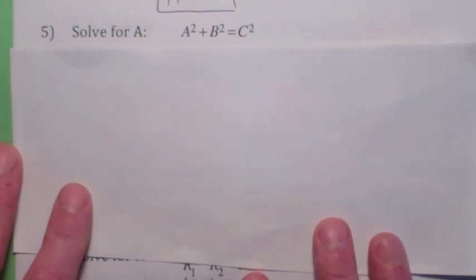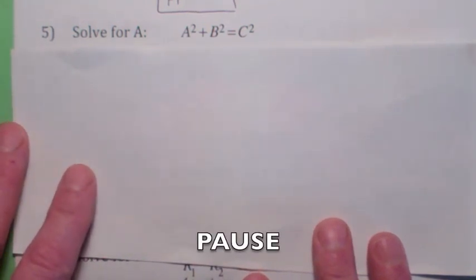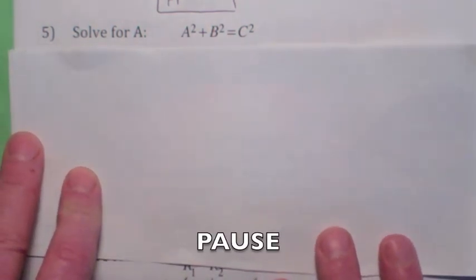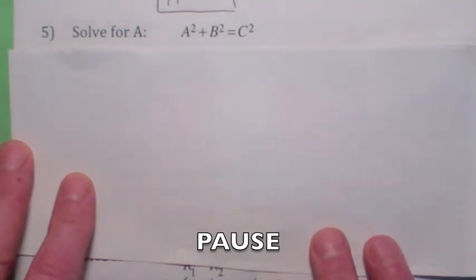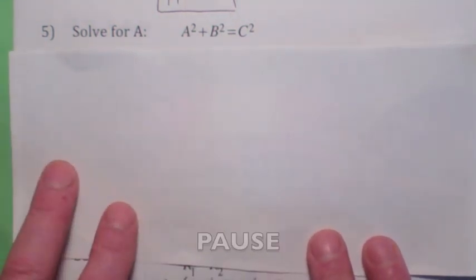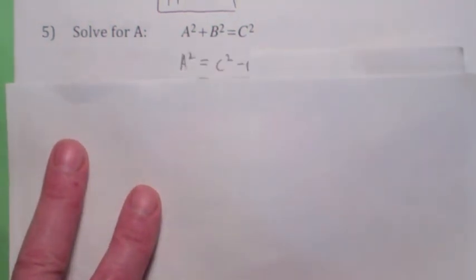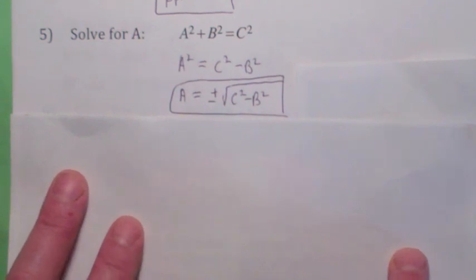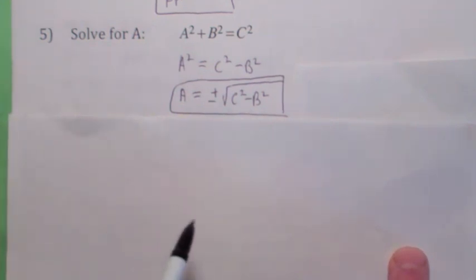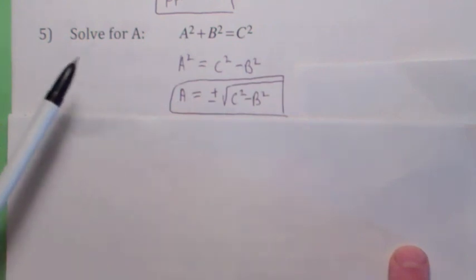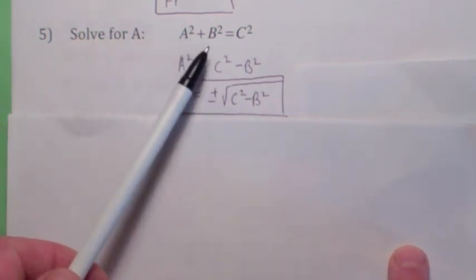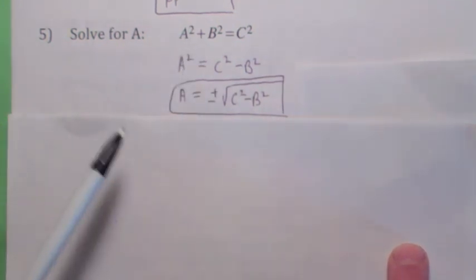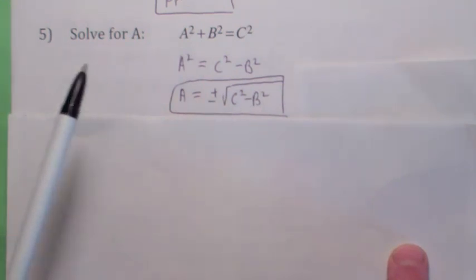This one is kind of interesting. If you solve this for a, well, go ahead and try that. When you solve this for a, you would probably subtract b squared first. Now, when you finish it, you say a is plus or minus the square root of c squared minus b squared. Now, this is where it gets kind of subtle.